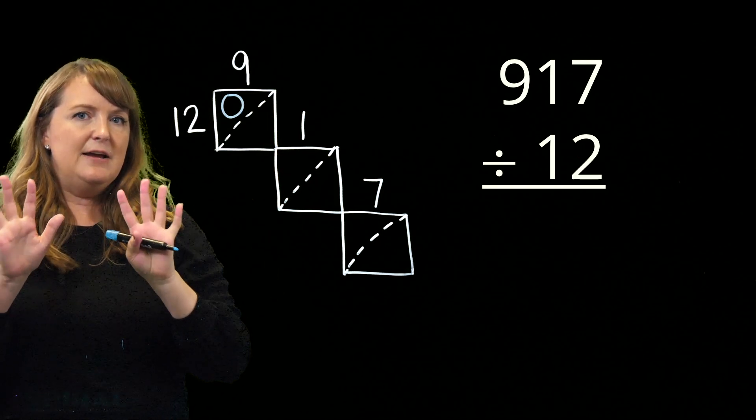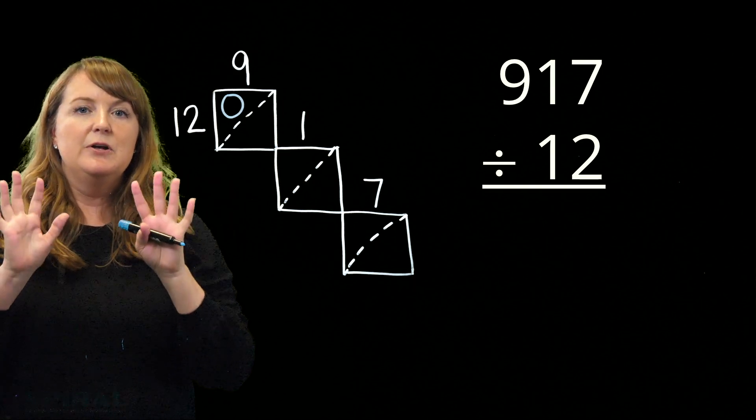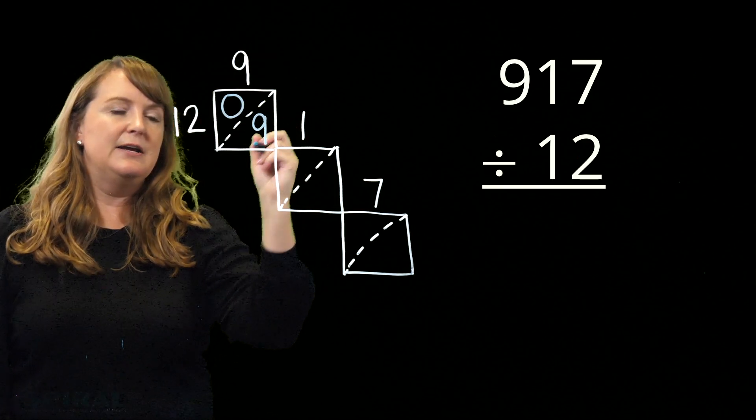But if I have those 9 fingers, I still have 9 remaining. Nothing happened to those. So I can make 0 groups of 12, but I have 9 remaining.